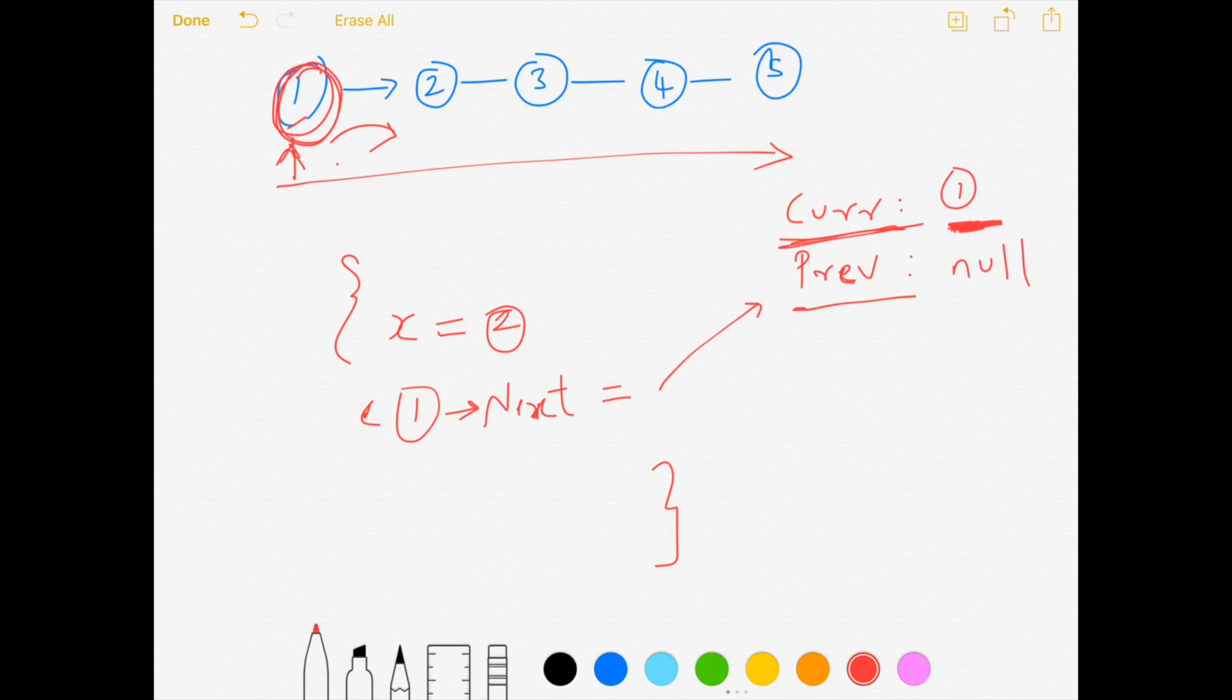The next value after one should be null in a reverse order. The next value after one is going to be my current previous. This will make sense once we get to the next iteration. But basically, we are setting the previous iterations result to the current iterations next.